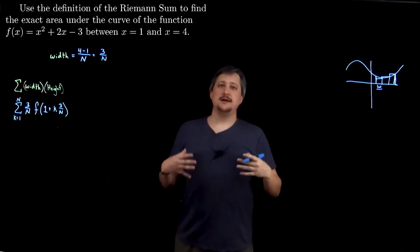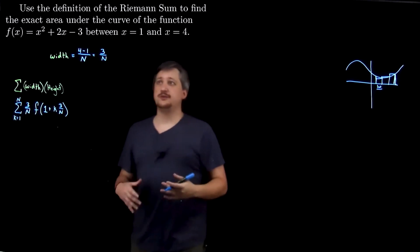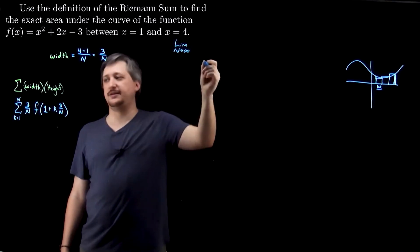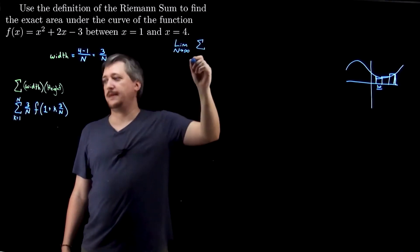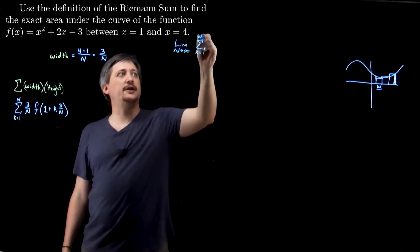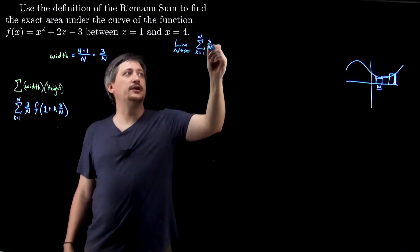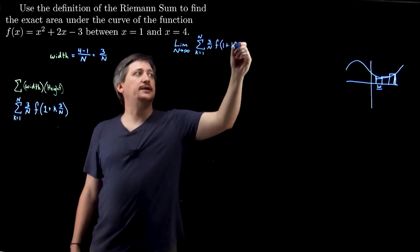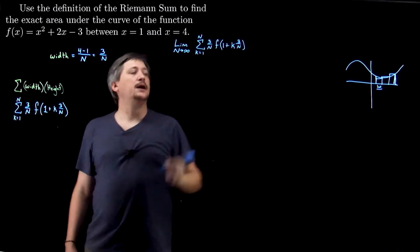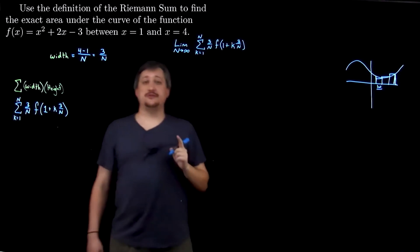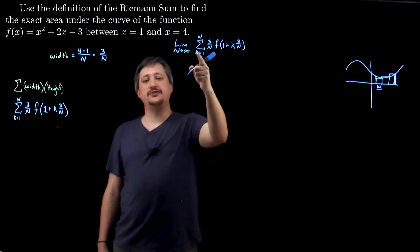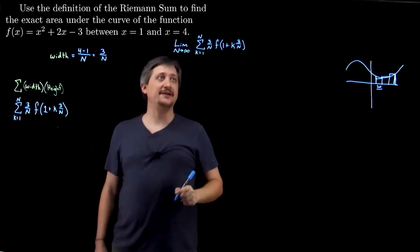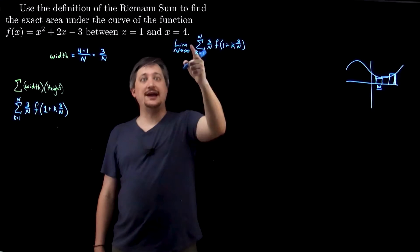The whole idea here is that ultimately I want to calculate the limit as capital N goes to infinity of the sum K going from one to capital N of the width times height: three over capital N times f of one plus K times three over capital N. The important thing to remember is that you can move stuff outside of the sum as long as it doesn't depend on the index K — not capital N. This is going to be pivotal. I could move the three over capital N out, and I will at one point.